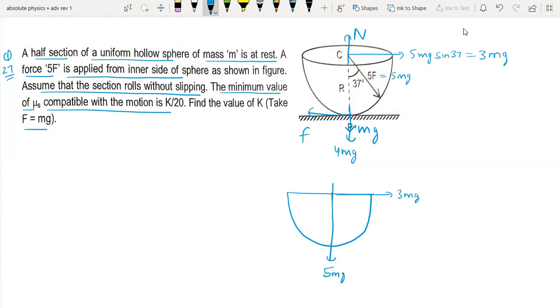So if we look at this equation: 3mg minus F is equal to ma, equation number 1 for translation.